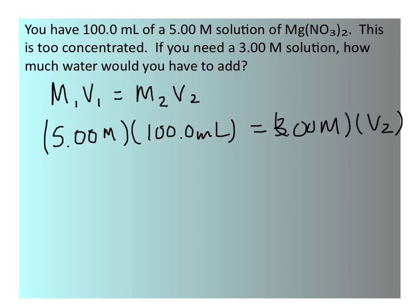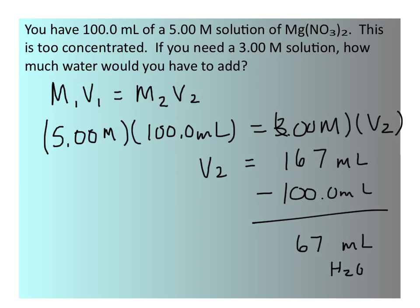And that means we're going to solve for the volume of our new solution. The answer is 167 milliliters. However, this is not our final answer. This volume is the volume of the original solution that was there plus the water that was added. If we want to know how much water only we need to add, we need to subtract off the original volume. That leaves us with 67 milliliters of water. That's our final answer.